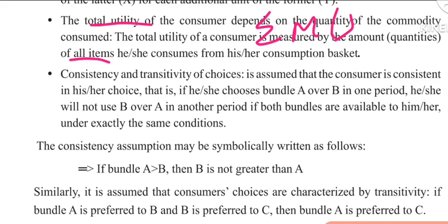Another assumption is consistency and transitivity of choices. It is assumed that the consumer is consistent in his or her choices — if he or she chooses bundle A over bundle B in one period, he or she will not choose B over A in another period if both bundles are available under exactly the same conditions.